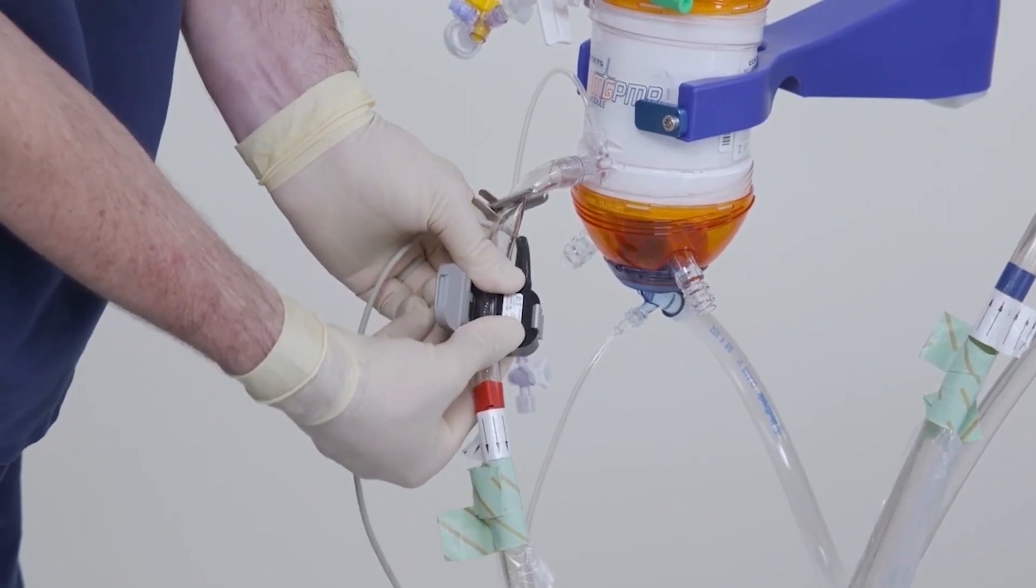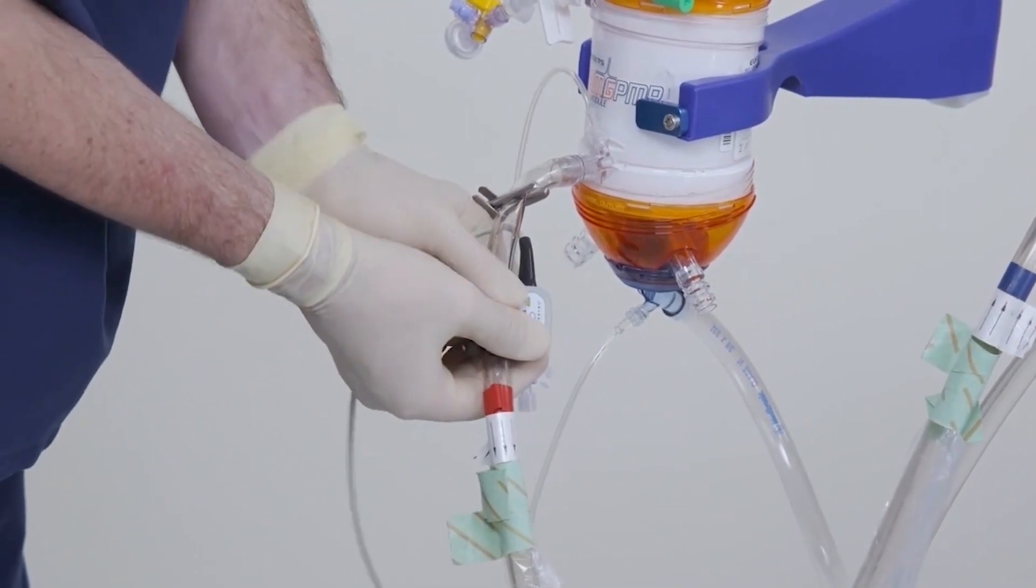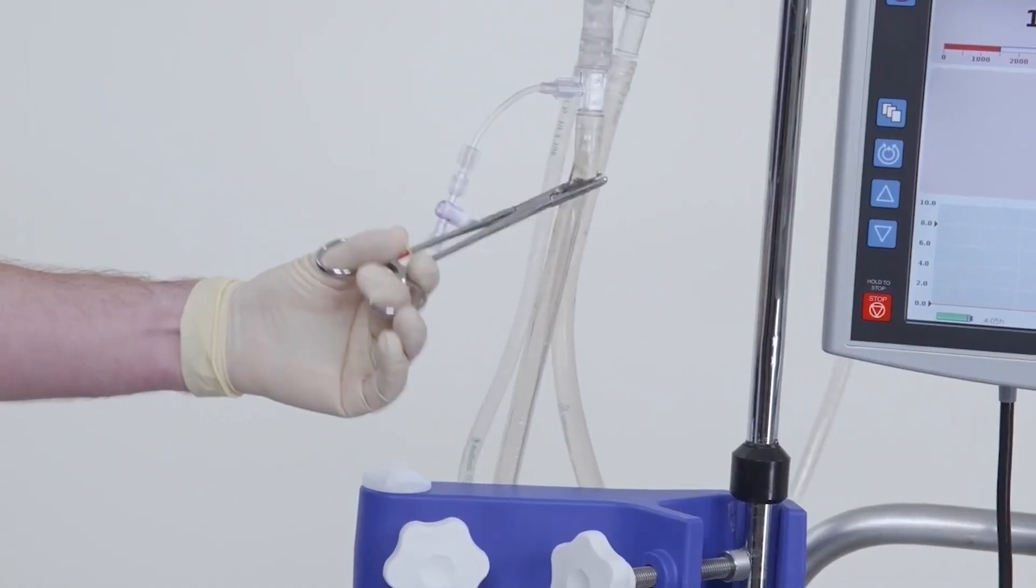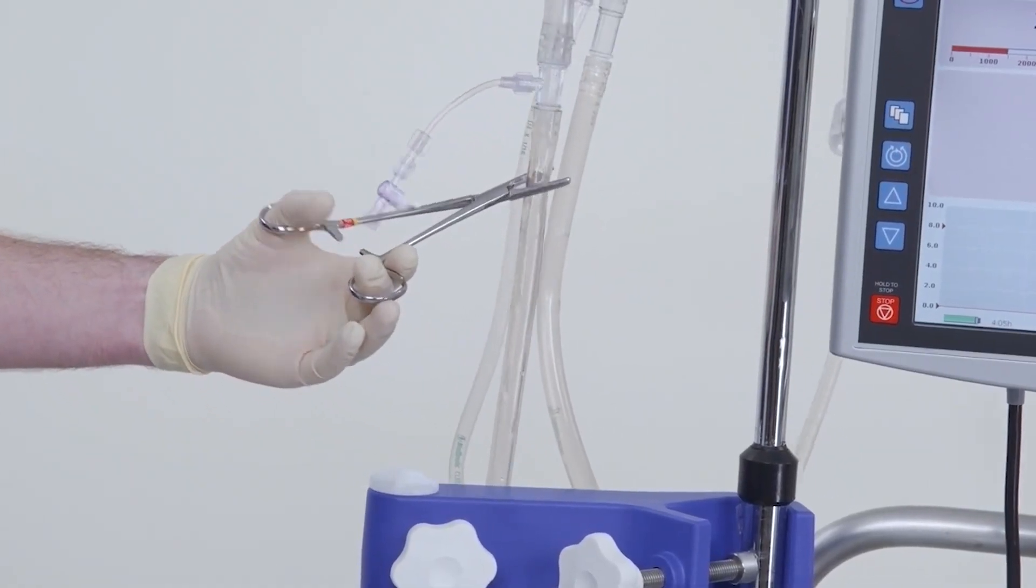Then place the CentraMag flow probe on the outlet tubing of the oxygenator. Next, remove both tubing clamps from the oxygenator outlet line to prime the rest of the circuit.